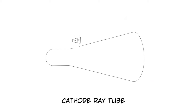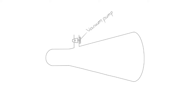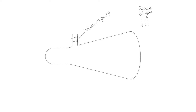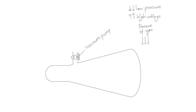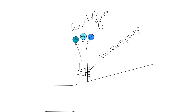This glass tube is a cathode ray tube. It has a vacuum pump which is used to reduce the pressure of gas inside the tube. This is done because electrical discharge through gases can be observed only at low pressures and high voltages. So this vacuum pump empties almost all the gases out of the tube, but it is impossible to have a complete vacuum.